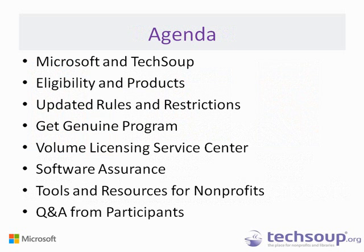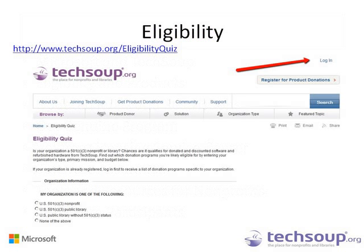We'll start off talking about eligibility and products, rules and restrictions, and the Get Genuine Program. Then we'll look at some questions from the chat pane, which I'll read aloud to the presenters. After that we'll cover the Volume Licensing Service Center, Software Assurance, and additional resources, and close out the hour with additional questions. With that, I'll hand over to Alexandria Lewis to get us started.